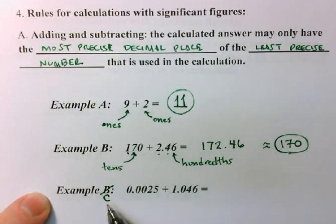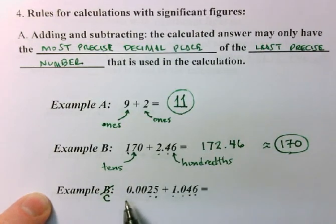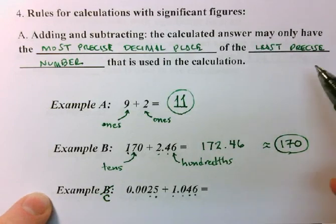Final example, C. Here I have two numbers, and I'm just going to quickly identify my sig figs in each number using my rules. Remember these are leading zeros and they don't count, sig figs. Now applying my rule for addition and subtraction, the most precise decimal place of the least precise number...